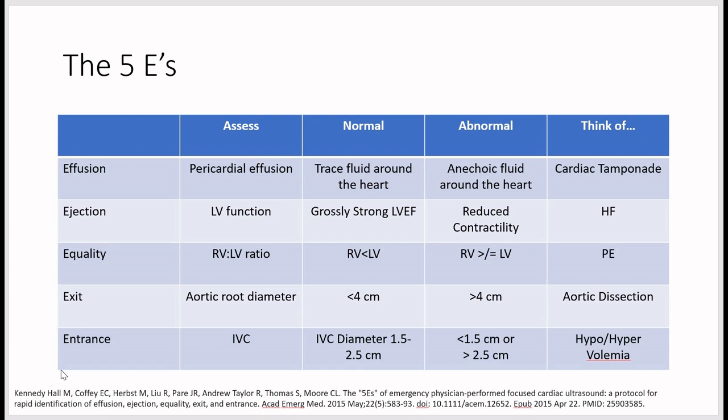For ejection, assess LV function — normal is a strong LV ejection fraction; abnormal is reduced contractility, suggesting heart failure. In the parasternal long axis, look at the anterior mitral valve leaflet during diastole: if it almost touches the septum, the ejection fraction is likely near normal.